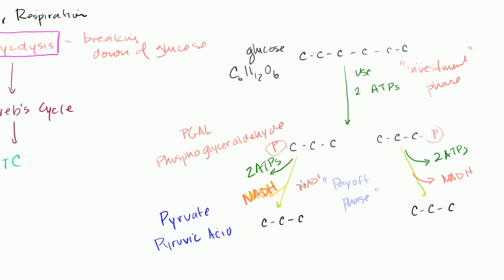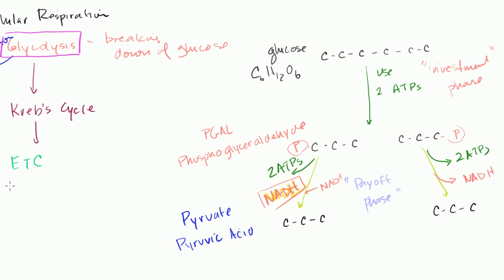Remember, we learned a couple of videos ago that you can view reduction as a gain in hydrogen. So the NAD gets reduced to NADH. And then later on, these NADHs are used in the electron transport chain to actually produce ATPs.